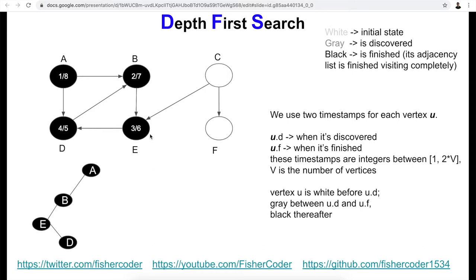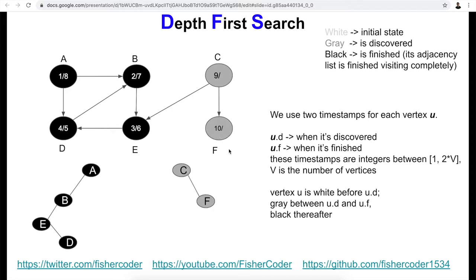We haven't finished traversing the entire graph yet. Depth first search will pick another node as the new source and repeat the process. We pick c — we mark it gray, and c's discovery time is nine. From c we only visit undiscovered (white) nodes. Even though c points to e, e is already black so we skip it. Next we discover f with discovery time ten.